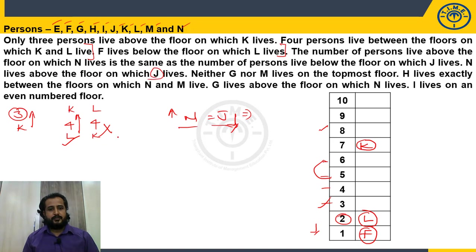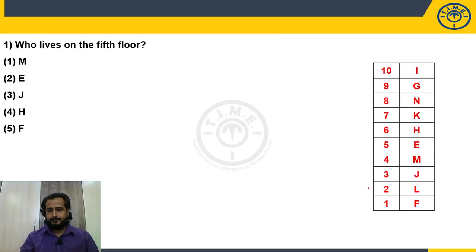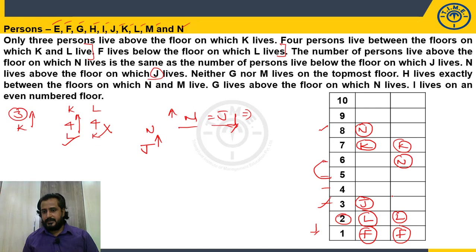Next clue: N lives above the floor on which J lives. In possibility 1, N is on the 8th floor and J is on the 3rd floor — N is above J, so this is valid. In possibility 2, N is on the 6th floor and J is on the 5th floor — N is above J, so this is also valid. We still have two possibilities remaining.